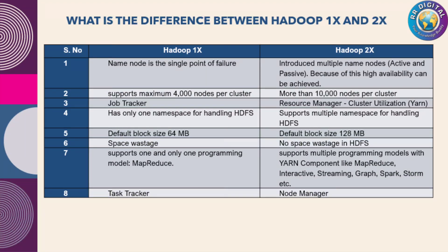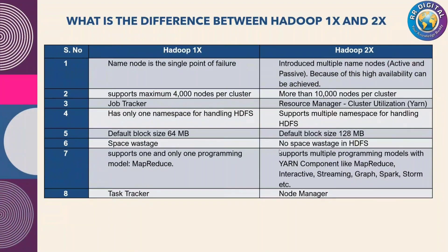Point one: NameNode is the single point of failure. So if NameNode goes down, we have to wait till that NameNode is up. Once NameNode is down, it is not possible to interact with any DataNodes. So if you want to retrieve your data or if you want to store your data, that is not possible if NameNode goes down. So that is called NameNode is the single point of failure — there is no alternative for NameNode in Hadoop 1x.